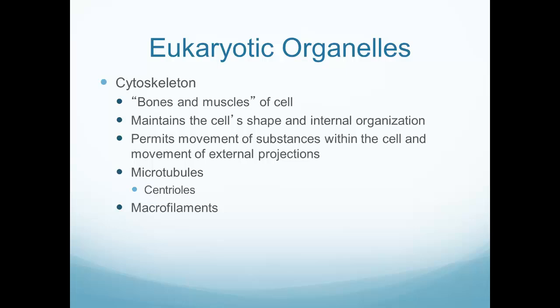The cytoskeleton is the muscle and bones part of the cell — it maintains cell shape and internal organization. The cytoplasm gave the cell shape, but it could have been just a random blob without the cytoskeleton. The cytoskeleton causes that cell to be round, oblong, or whatever shape it needs to be for normal functioning.